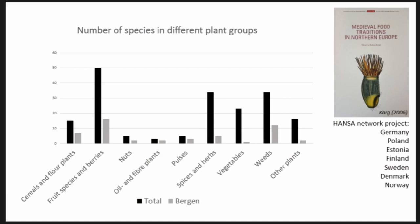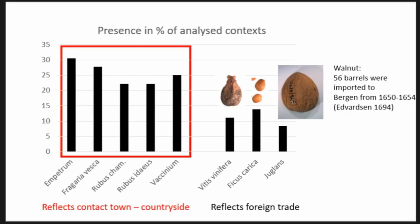We had the Hansa network project, looking at plant material from medieval time in Germany, Poland, Estonia, Finland, Sweden, Denmark, and Norway. What we could see was that we had fewer species present in Bergen, especially compared to Poland and Germany — a pattern also found in other Scandinavian countries. But what was very common in all our samples was berries growing just outside the town, which they could collect and trade or had connections with through hinterland networks. These were present in 20 to 30 percent of the samples or contexts investigated.